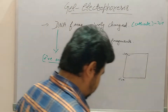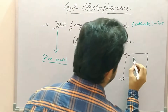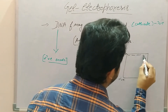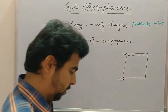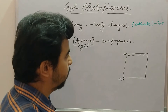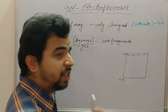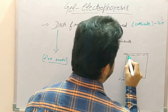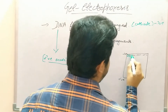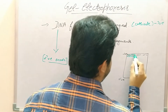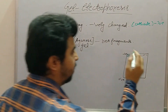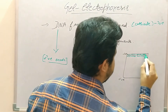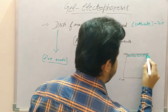Suppose we have DNA fragment 1, DNA fragment 2, DNA fragment 3, DNA fragment 4, and DNA fragment 5. We create a well-like structure with the help of agarose gel, differentiating each segment of DNA.